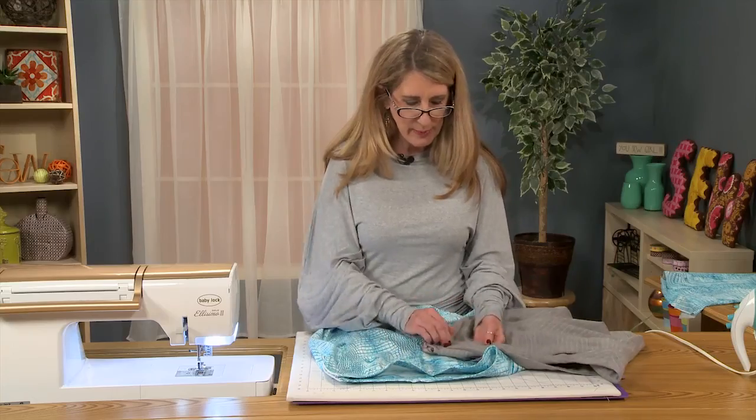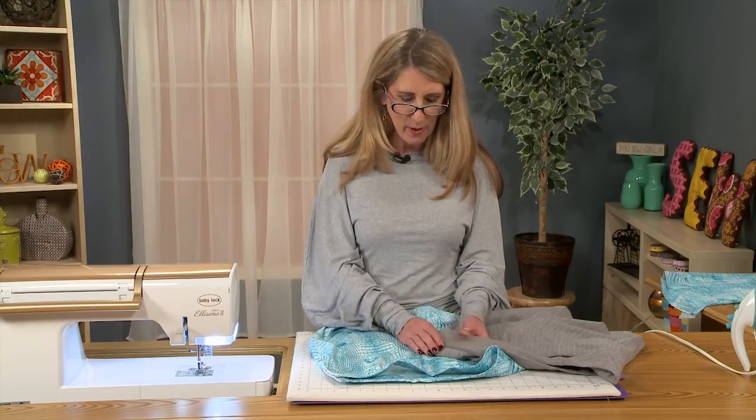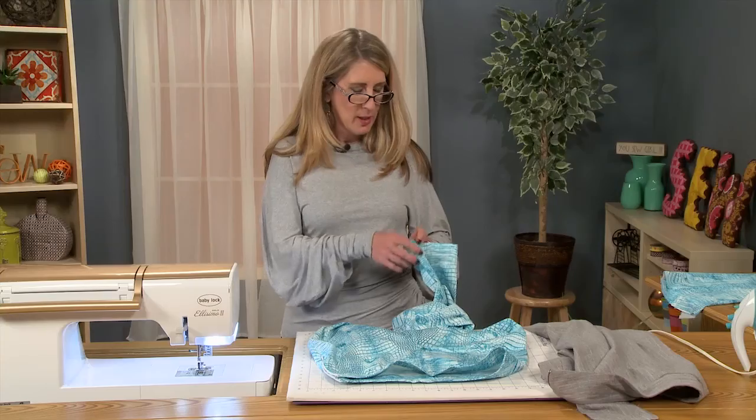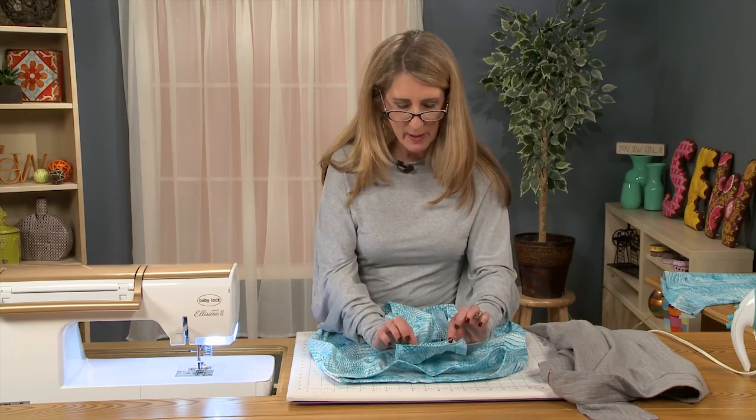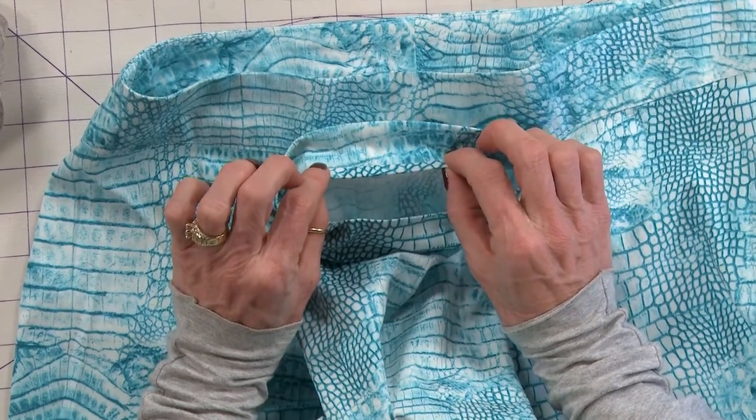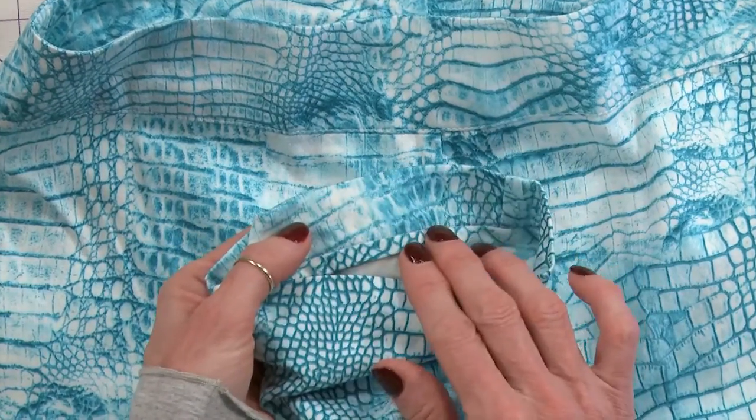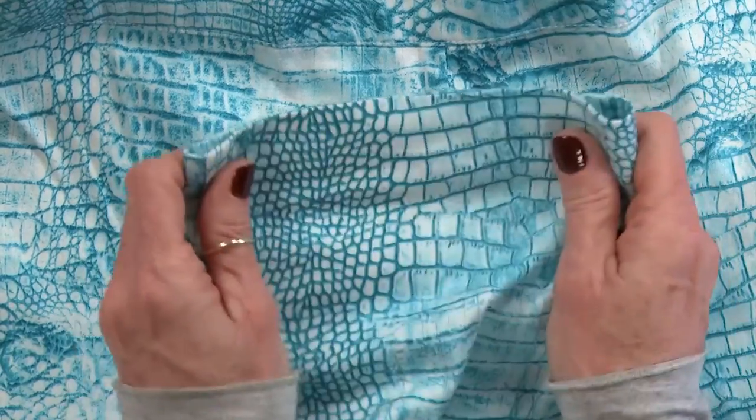Now when I talked about this, I said that you could buy the seam binding at your local fabric store, but sometimes you can't find one that really matches your fabric and I'll show you here. I also did a seam binding on the hem of my pant because it just made for a very pretty little finish. And I decided I would prefer for this to match my fabric.